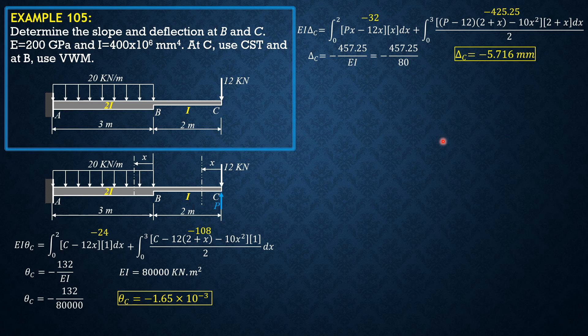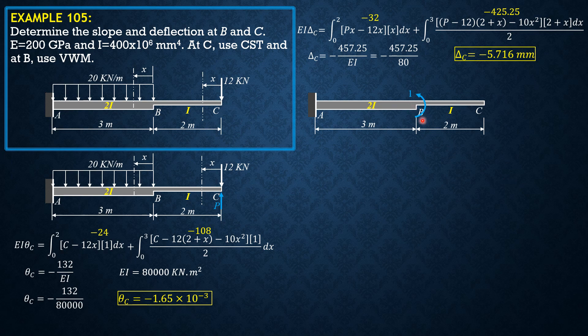Then for virtual work method, so that's the same sectioning. Due to actual loads, then we apply counterclockwise unit couple 1 at B. We have virtual work at B. So in this section, there's no virtual force considering the right for simplicity. So EI theta B is equal to 0 to 2 of negative 12x times 0 dx.